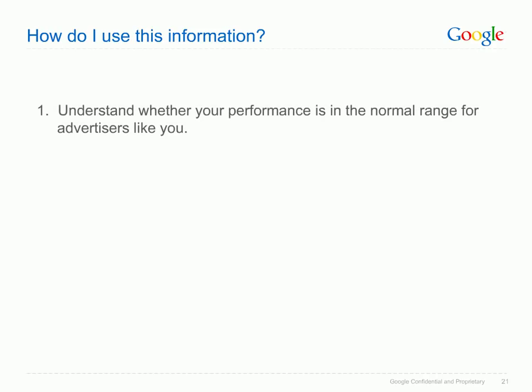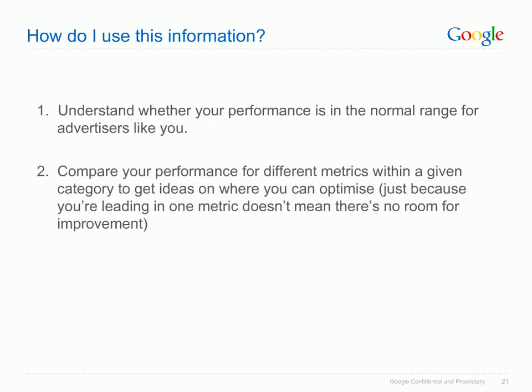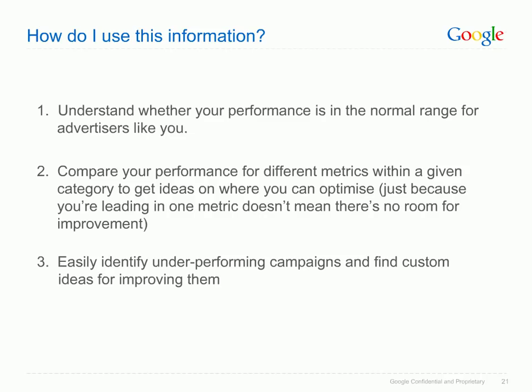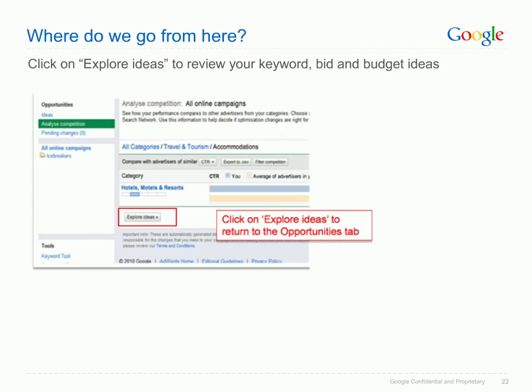So how can you use competitive information? First, understand whether your performance is in the normal range for advertisers like you. Second, compare your performance for different metrics within a given category to get ideas on where you can optimize — just because you're leading in one metric doesn't mean there's no room for improvement. Third, easily identify underperforming campaigns and find custom ideas for improving them. Once you've evaluated your performance, click the 'Explore Ideas' button to go back to the ideas section of the Opportunities Tab.